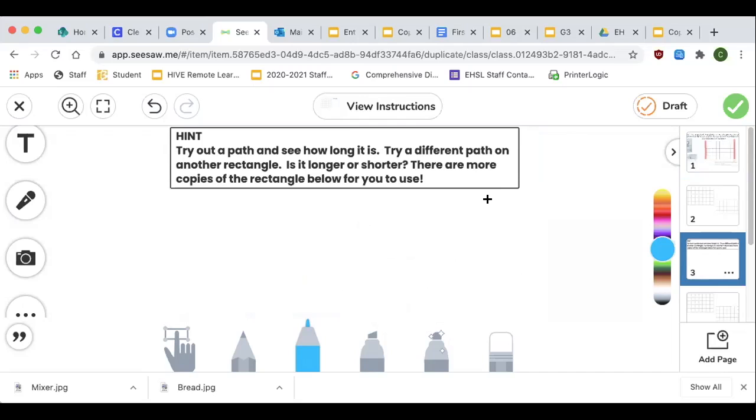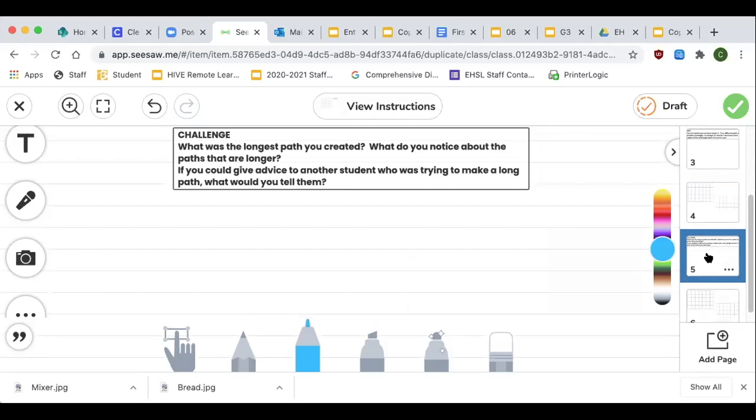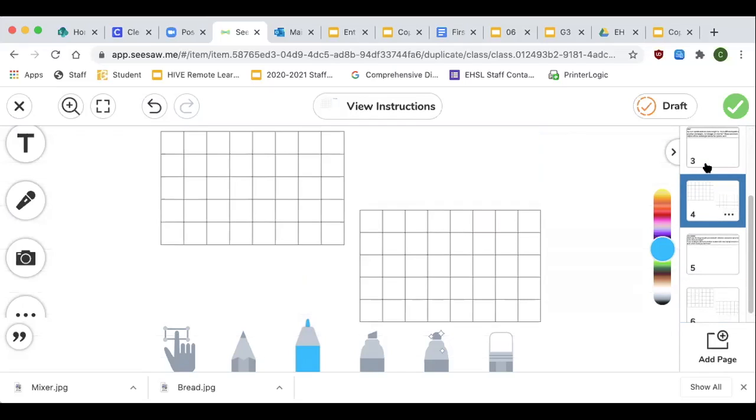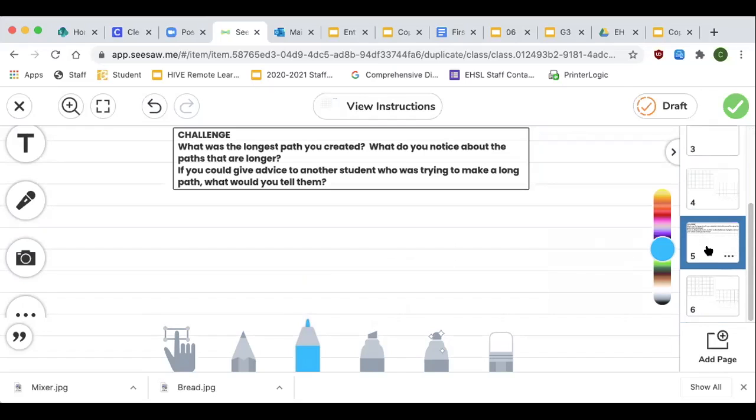Is one longer? Is one shorter? And it kind of repeats itself twice, which is totally fine. You guys can do this. The point is to challenge yourself and to see what kind of tools you have here to make things work. There is a challenge today. The challenge is what was the longest path you created? And what do you notice about the paths that are longer? So what's the longest path? And what do you notice about the longer paths?